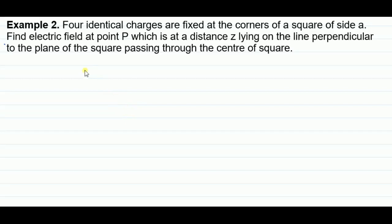The second problem is: four identical charges are fixed at the corners of a square of side A. Find the electric field at point P, which is at a distance Z, lying on the line perpendicular to the plane of the square and passing through the center of the square.